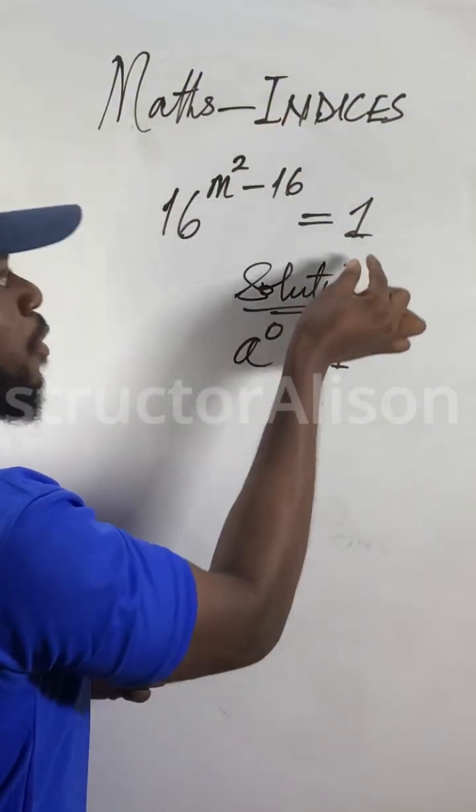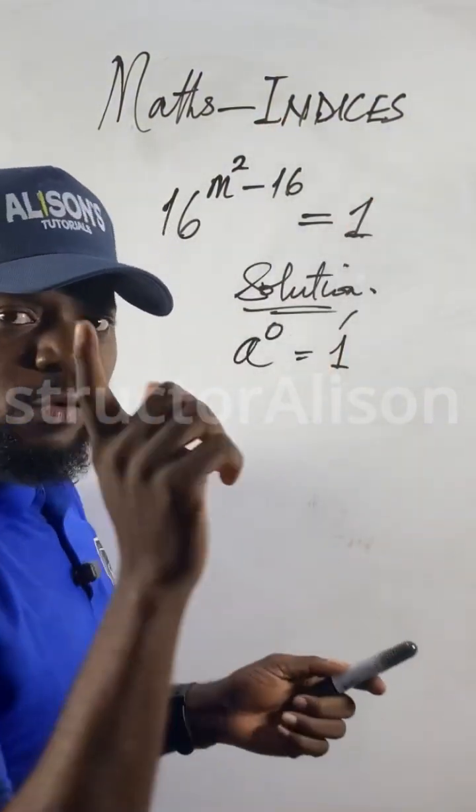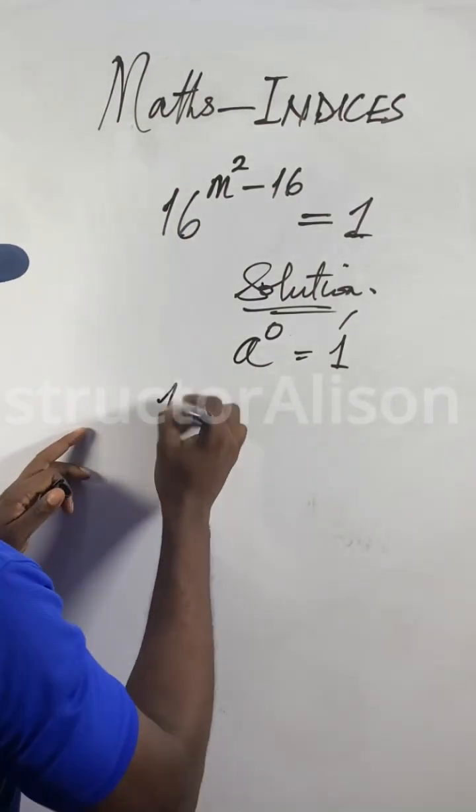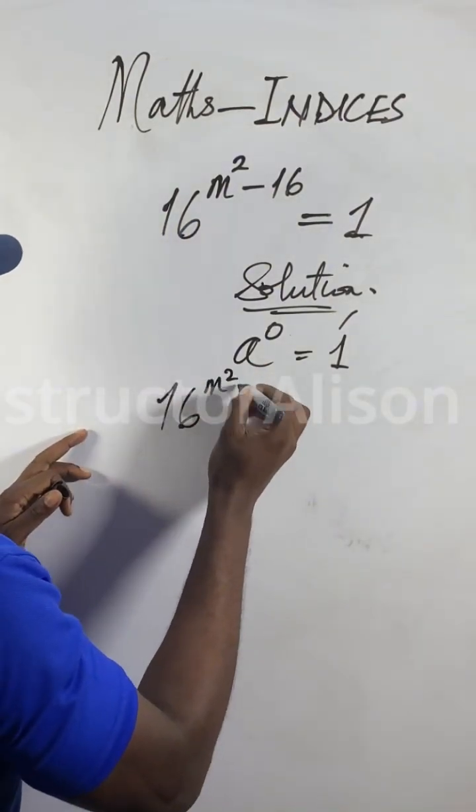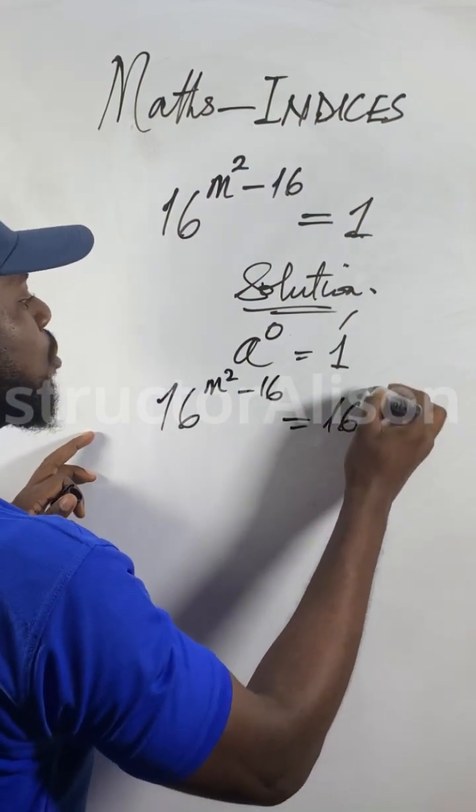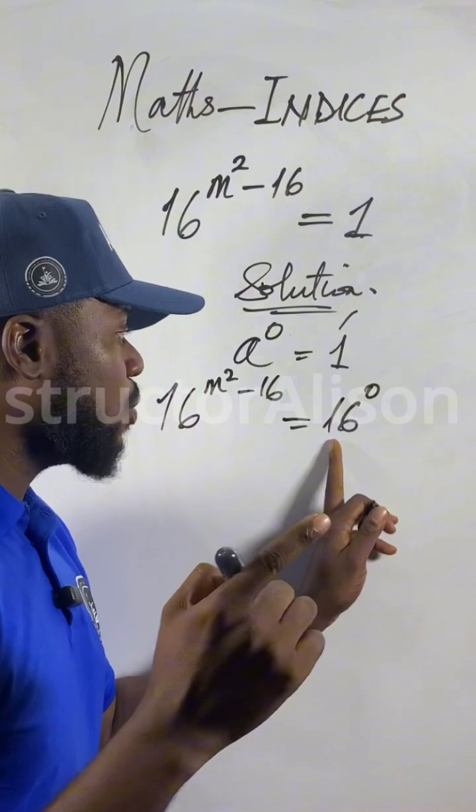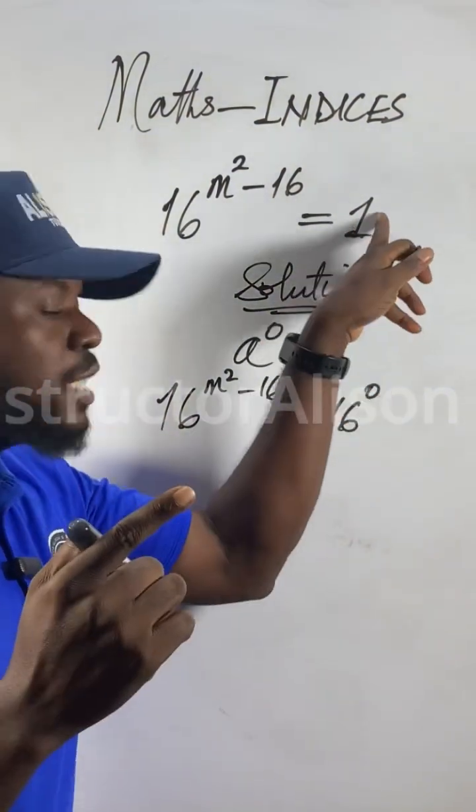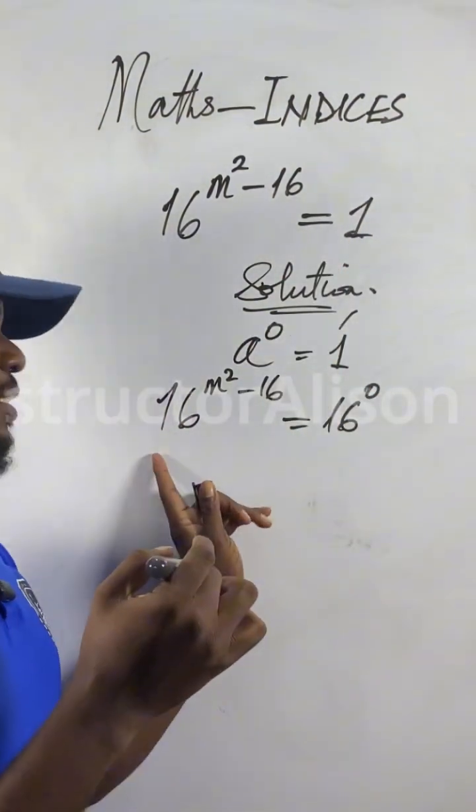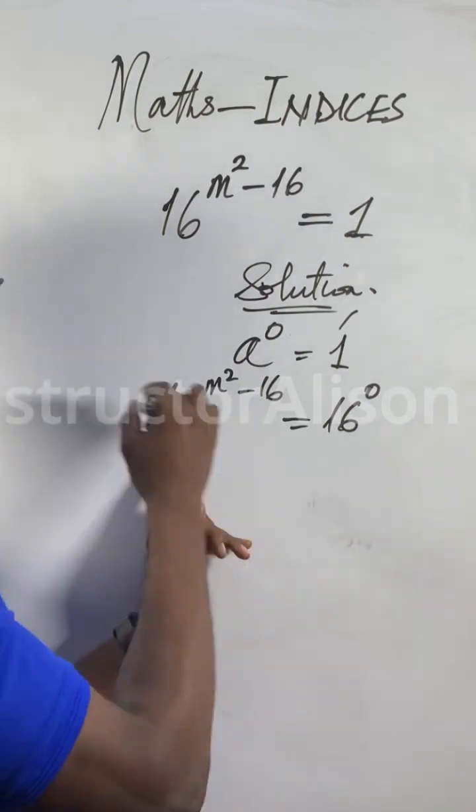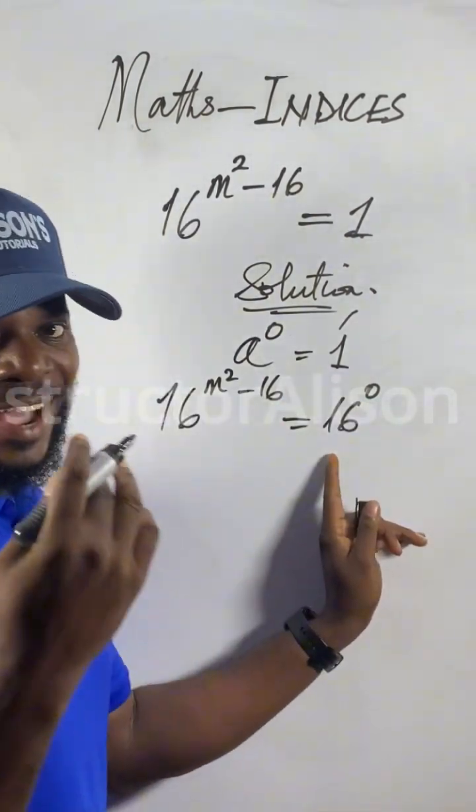So if I get 16 to the power of m squared minus 16 equal to, I will put here 16 to the power of 0. Anything raised to the power of 0 is 1. Why I choose 16? Because I see 16 here. As I choose it like this, it will be easy to cancel 16 on both sides.